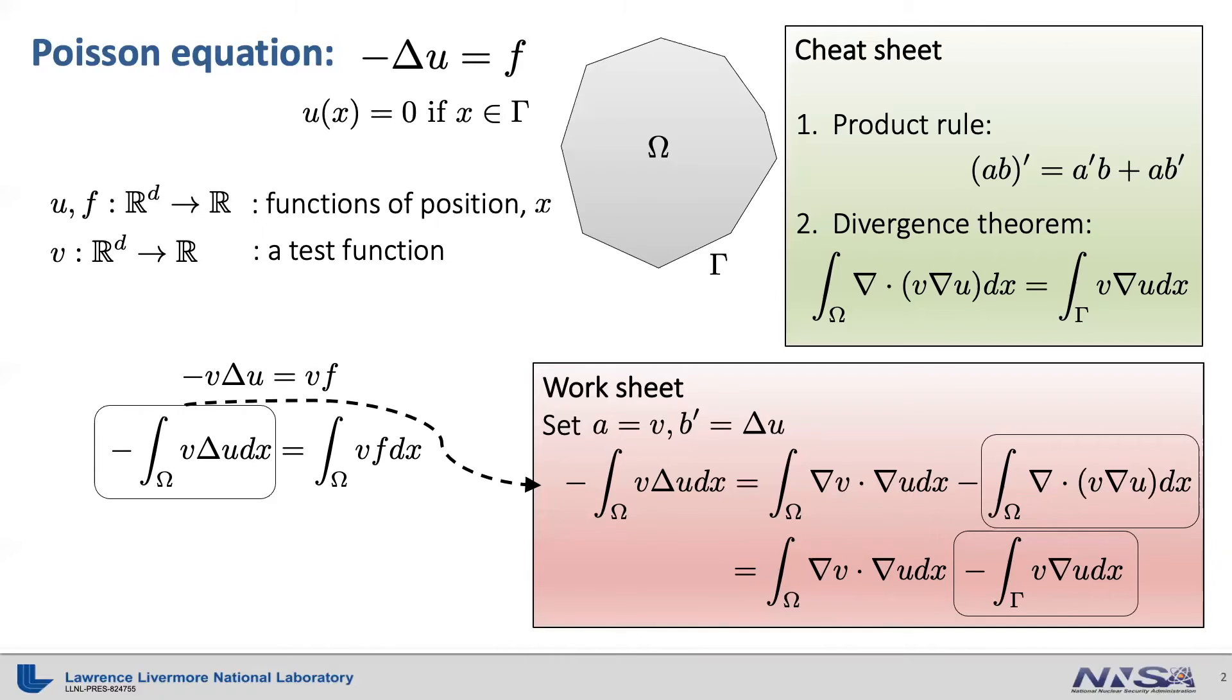Now let's look at the surface integral again. Here we have some freedom on the choice of the test function V on the boundary, because we are only interested in obtaining solution in omega, not particularly on the boundary. Well, the solution at the boundary is already determined by the boundary condition, right? So we can set V equals zero at the boundary, which makes this surface integral disappear. This enables us to replace this volume integral with another volume integral with only first derivative terms. We call this integral equation a weak form.